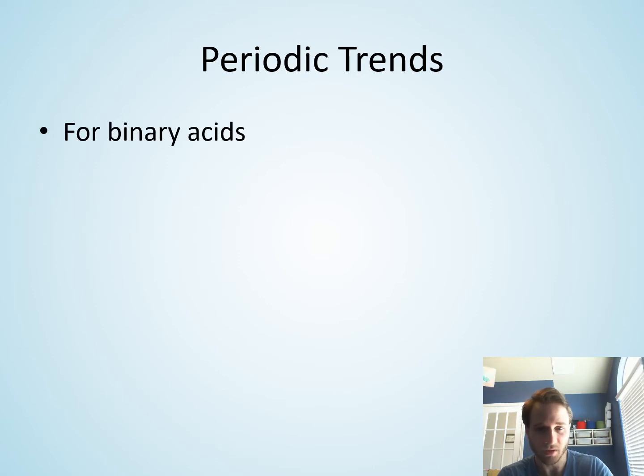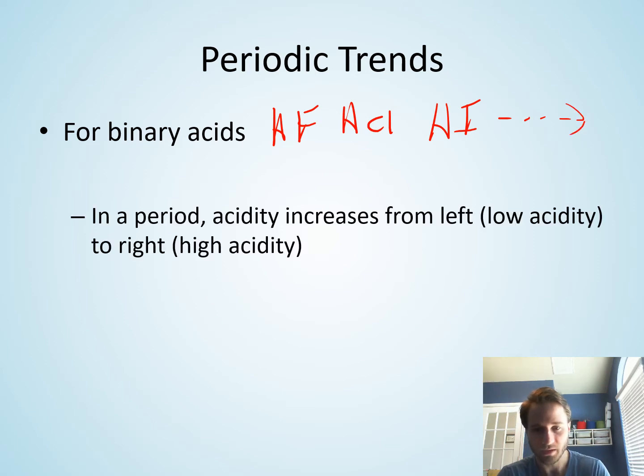So what does this all mean in terms of periodic trends? For binary acids - that's like HF, HCl, HI, and so forth - the acidity of the acid increases from the left to the right. So on the left side of the periodic table, you have low acidity; to the right, high acidity. CH4 isn't really much of an acid. NH3 acts more as a base, not an acid. But then you get to H2O, which is a very weak acid, and then you get to HF, which is a much stronger weak acid than H2O. So the acidity of the hydrogens in these compounds increases as you go from left to right across the periodic table.